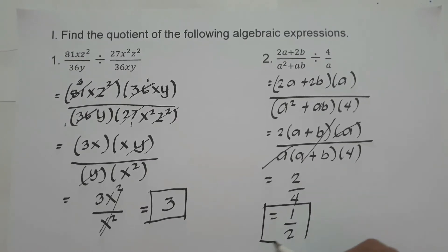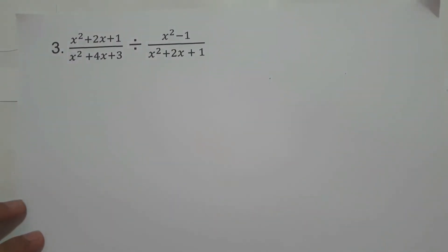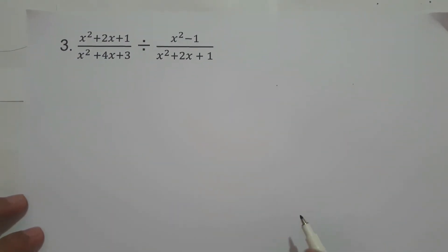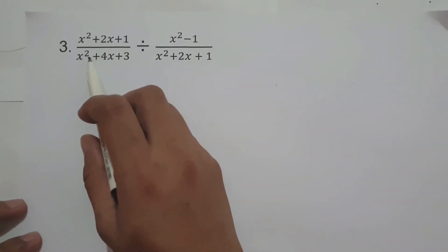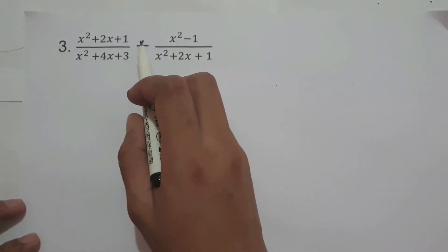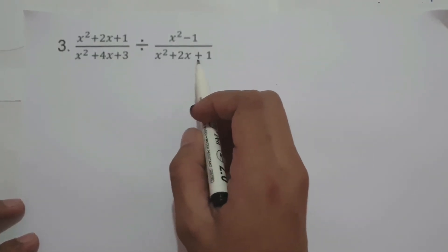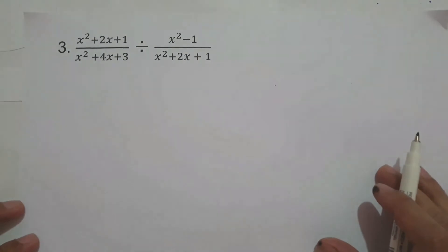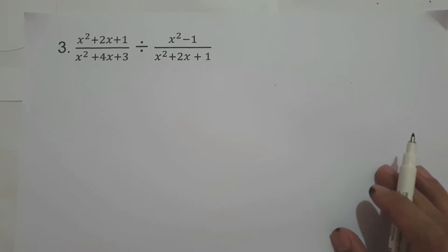So let's have another example. On number 3, we have x² plus 2x plus 1 all over x² plus 4x plus 3, divided by x² minus 1 all over x² plus 2x plus 1. Before we multiply, let us find the factors of the numerator and denominator.